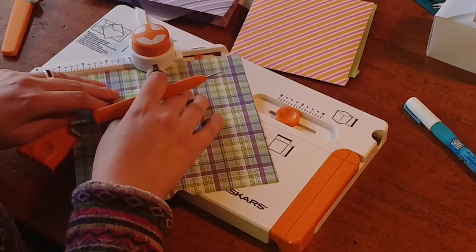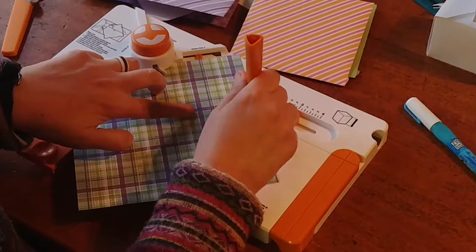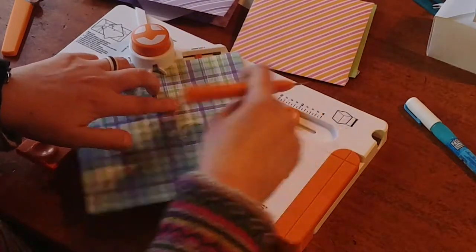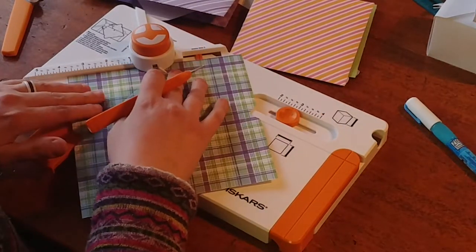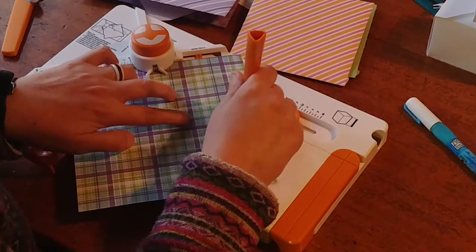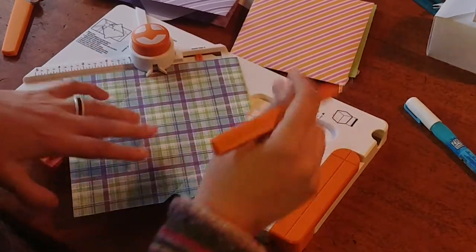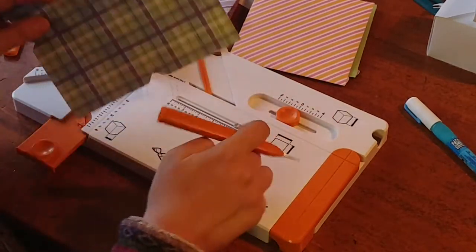I can't remember if I punched that already. Then, you're going to turn it, and you're going to do that on all, do that four times. One more here. 3 3⁄4. Do my score line. And then, that's it.